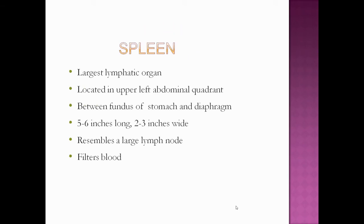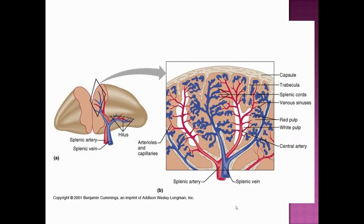Now we will see the spleen. It is the largest lymphatic organ, located in the upper left abdominal quadrant, found between the fundus of the stomach and the diaphragm. It is 5 to 6 inches long and 2 to 3 inches wide, resembles a large lymph node, and filters blood.